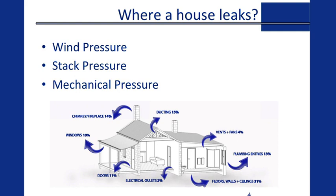So, where does a house leak? There are three types of pressure that affect air leakage: wind pressure, stack pressure, and mechanical pressure. Looking at a typical cross-section of a cottage, most of the leakage is actually coming from the top and the bottom of the building. Those are the primary areas, both for new and existing housing, that you want to start sealing up — in particular, to control the effects of stack pressure.